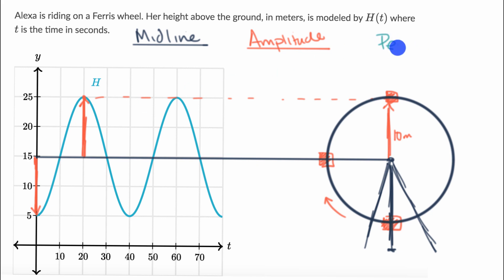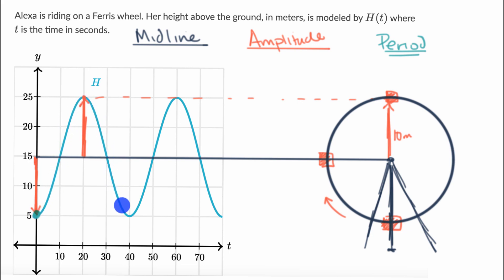The last feature I want to explore is the notion of a period. What is the period of this periodic function? Pause this video and think about that. The period is how much time does it take to complete one cycle. She starts at the bottom. After 10 seconds, not at the bottom yet. After 20 seconds, not yet. After 30 seconds, not yet. After 40 seconds, she's back at the bottom and about to head up again. So that 40 seconds is the period.